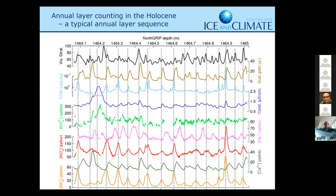When we did the ice core dating for GICC05 — the Greenland Ice Core Chronology 2005 — we counted annual layers like crazy. Especially Anna Svenson, my colleague in Copenhagen, did an amazing amount of counting. I was mostly working on automated methods for counting, which mainly failed. But we finally produced a timescale based on a mostly manual annual layer counting approach.